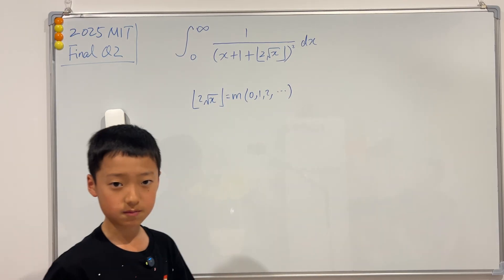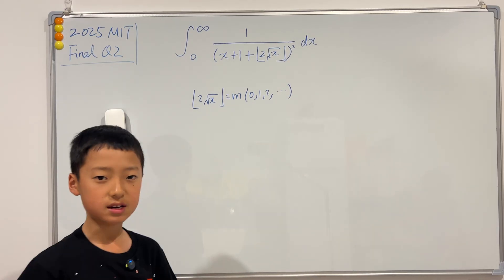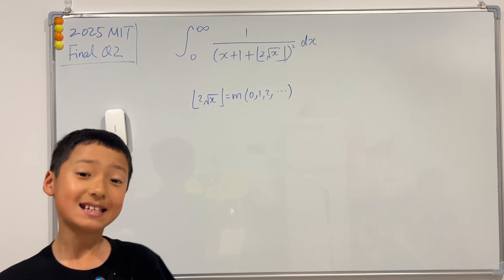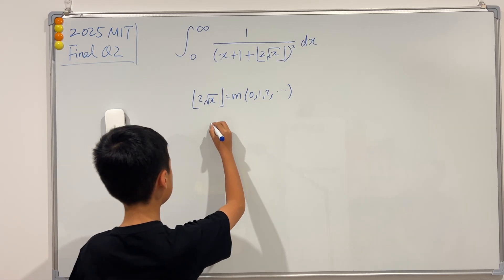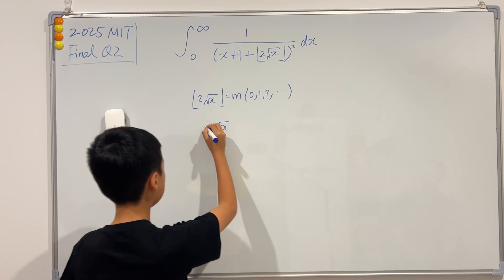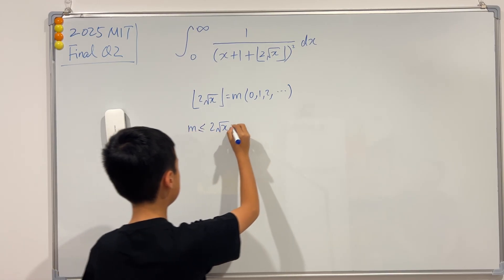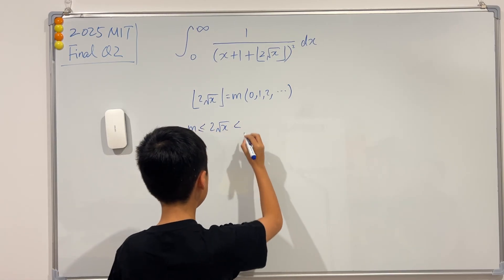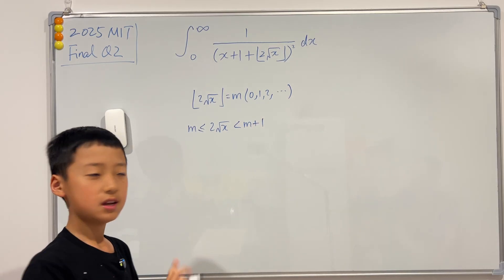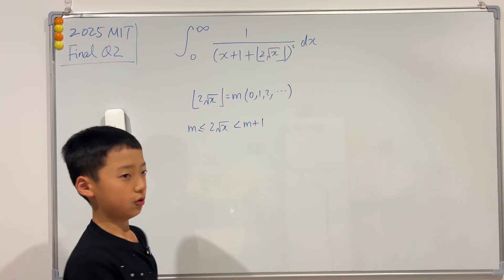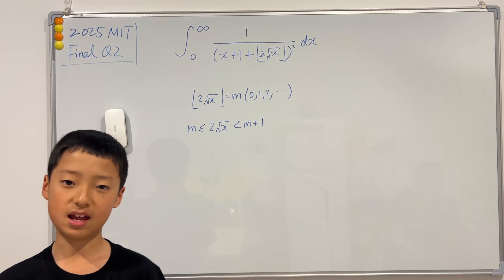To make this happen, we need the inside of the floor function — that is, 2√x — to be greater than or equal to m and strictly less than m+1. Note the inclusive inequality on the left and the strict inequality on the right.